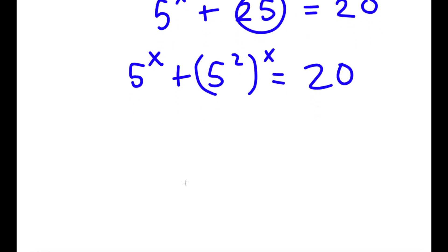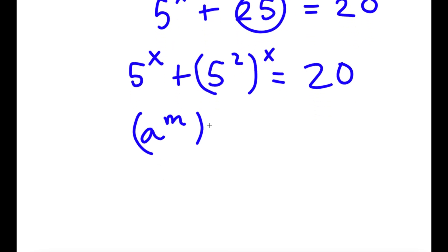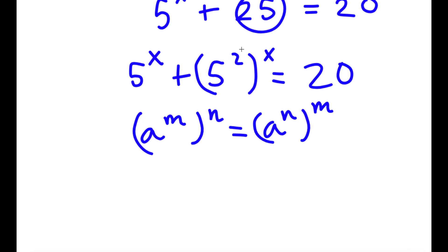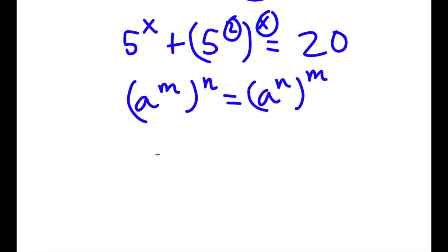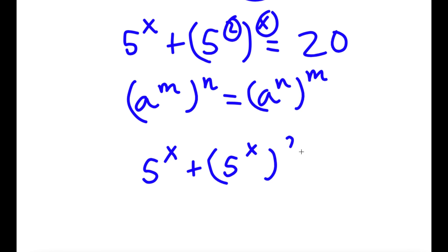Now, if I have something in the form a to the power of m to the power of n, it's the same thing as a to the power of n to the power of m. So 5 to the power of 2 to the power of x — I can switch the places of 2 and x. So now I have 5 to the power of x plus 5 to the power of 2x is equal to 20.